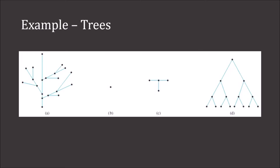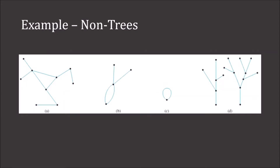Here we have four examples of trees. Obviously, this one here is the trivial tree. And here are examples of non-trees. The graphs in A, B, and C all have circuits, while the graph in D is not connected. Notice there is also no circuit in D, so this would be a forest.